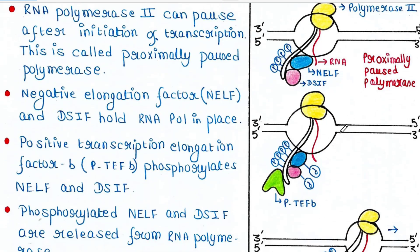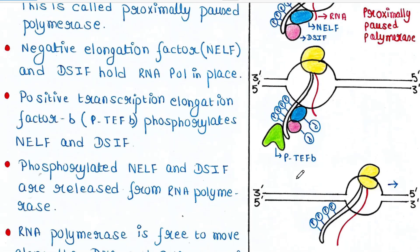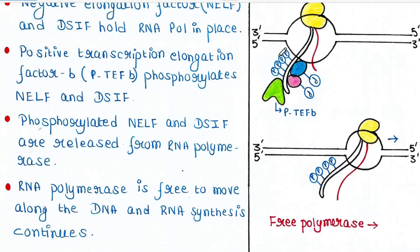Positive transcription elongation factor B, or P-TEFb, phosphorylates NELF and DSIF. The phosphorylated NELF and DSIF are then released from RNA polymerase.